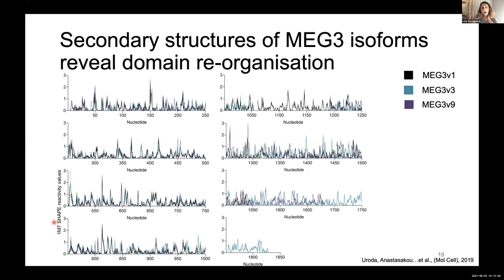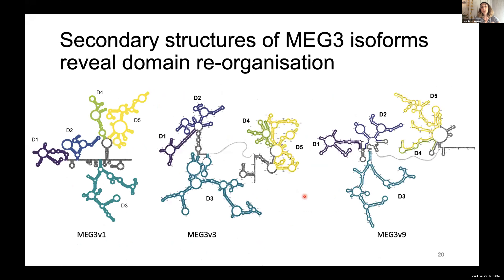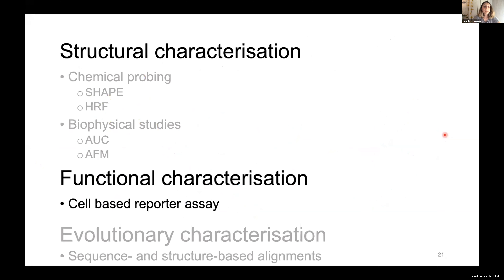Our collective results for the three MEG3 variants show individual nucleotide SHAPE reactivities across the full length of each isoform. There are regions with very good agreement, suggesting common structural features, and other regions with disagreement, suggesting domain reorganization events. For example, in variant 9 we don't see distinct domains 4 and 5, but instead see them merged into a single three-prime terminal domain.